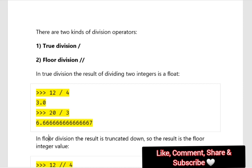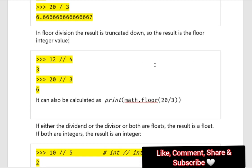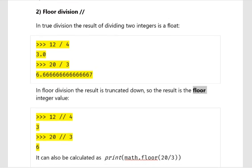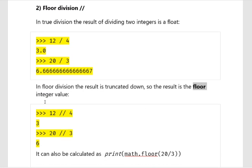Now if we talk about floor division — in floor division, the result is truncated down to the floor integer value. So whenever you are dividing two integers and the answer is a floating point value, it will take the floor value and give you an integer as the answer. For example, 12 floor division 4 gives us the integer value 3, whereas normal division 12 divided by 4 gives 3.0.